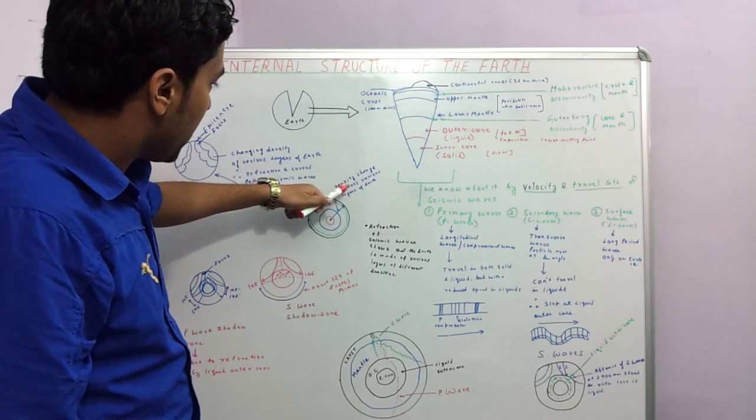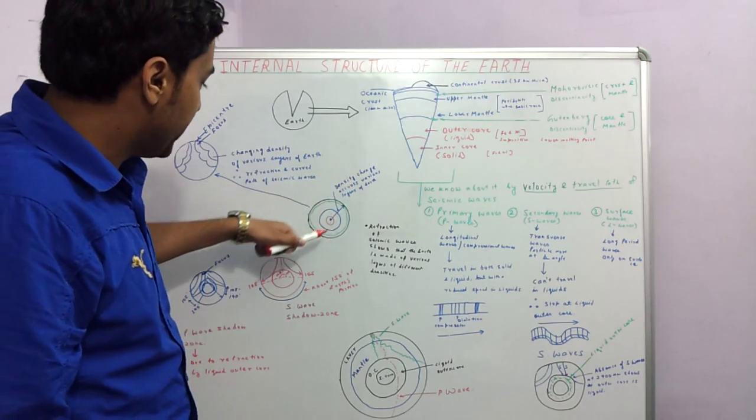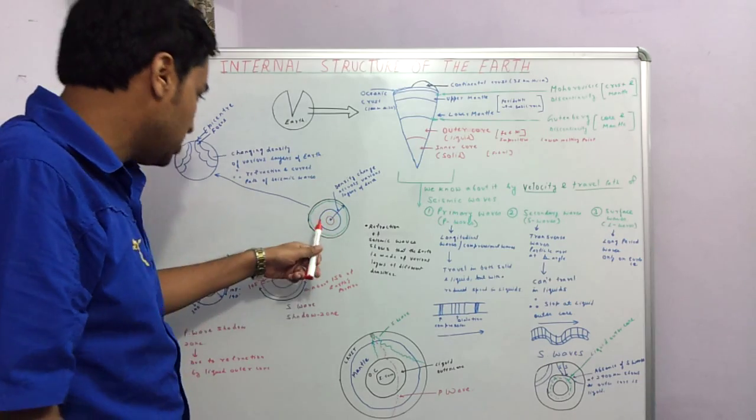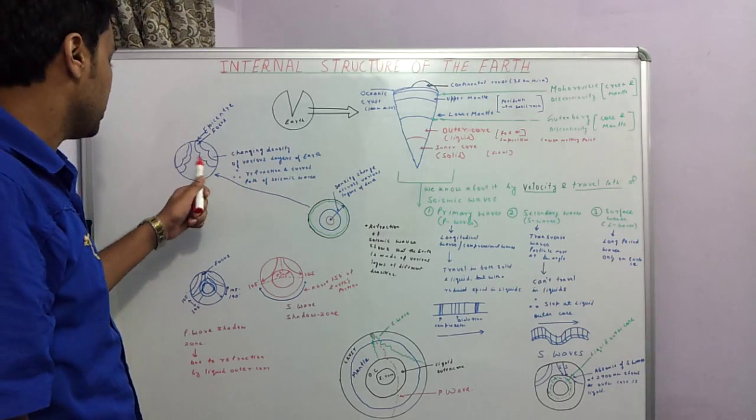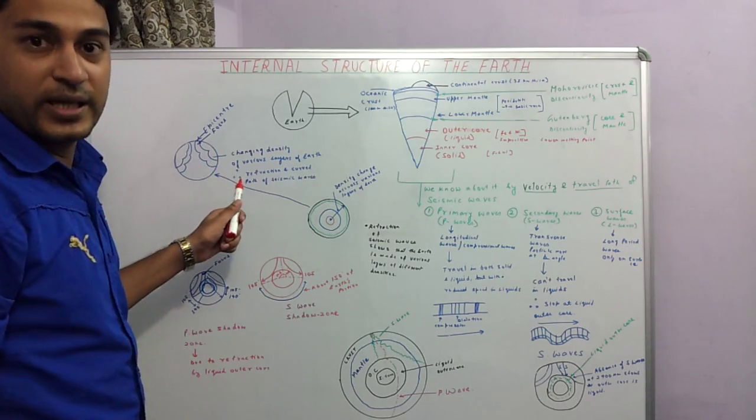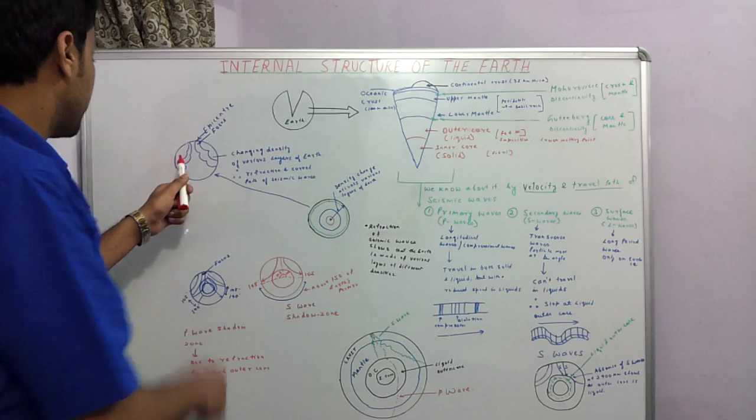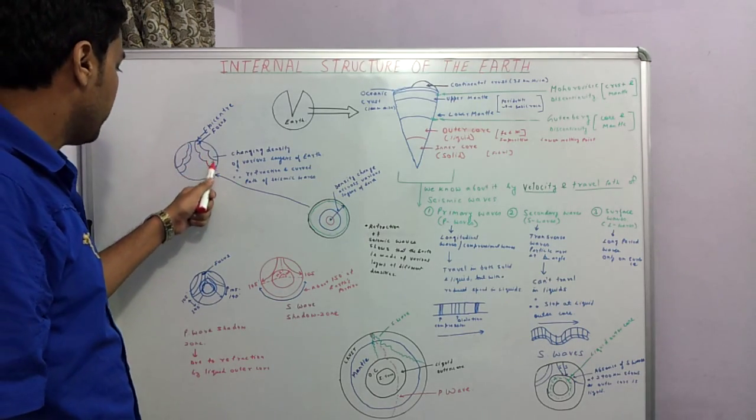Because the earth is made up of various layers and these layers have varying densities, we can see this in the diagram. The waves continuously suffer refraction. On account of refraction, they do not travel in a straight line. They adopt a curved path.